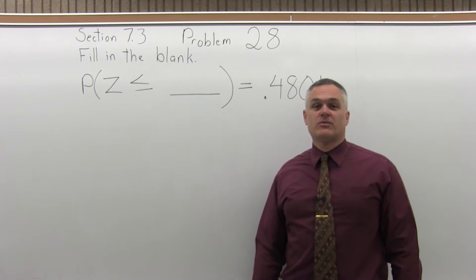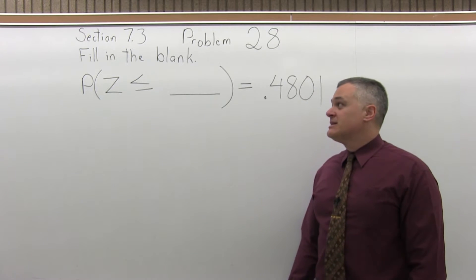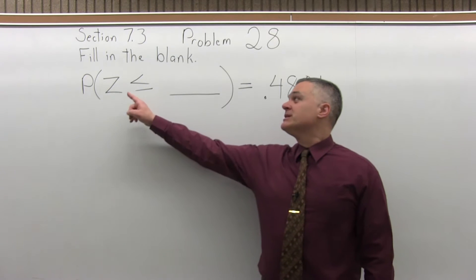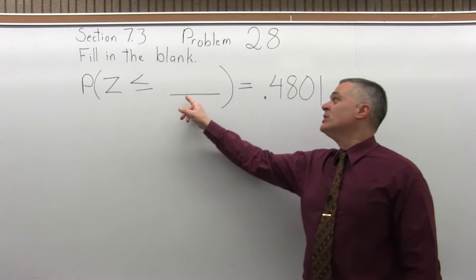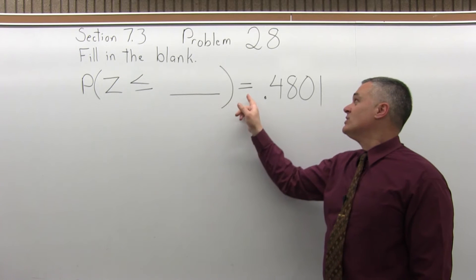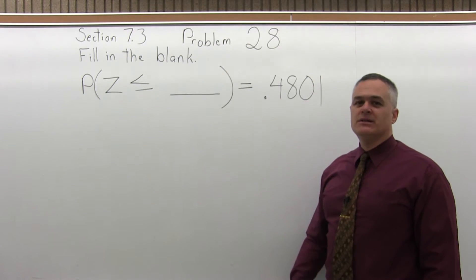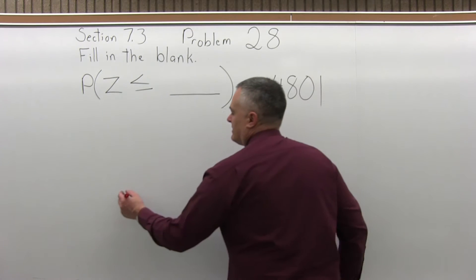This is Section 7.3, Problem number 28. Fill in the blank: the probability that Z is less than or equal to blank equals .4801. So to get this started,